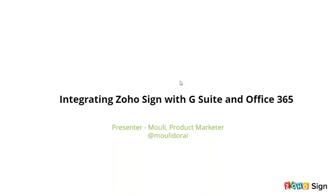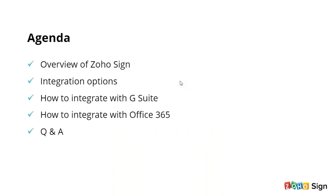This webinar is exclusively designed to educate our customers on how to integrate Zoho Sign with G Suite and Office 365. In today's webinar, we'll see a simple introduction of Zoho Sign and then we will see the various integration options available in Zoho Sign. Then we will see step-by-step instructions on how to integrate Zoho Sign with G Suite and the step-by-step integration steps to integrate Zoho Sign with Office 365. I have a surprise for you guys in this section, and finally we will have an interactive Q&A session.